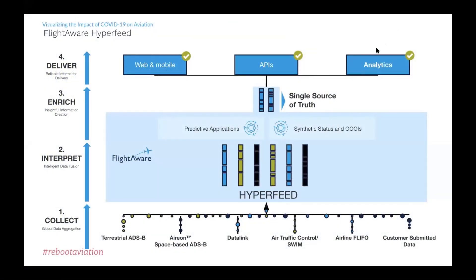Hi again, everyone. I'm here to set the scene on what's been happening in the aviation industry through the COVID-19 pandemic. I'm going to be doing that by analysing some of the traffic trends we've identified at FlightAware. We'll look at how these trends have panned out in different geographies, different sectors of aviation such as commercial passenger flights, cargo flights, business aviation, and some other slices and dices that really help visualise the impact of COVID-19 on aviation. I'll be using real statistics that FlightAware captured through its core business of being the world's leading aviation company.